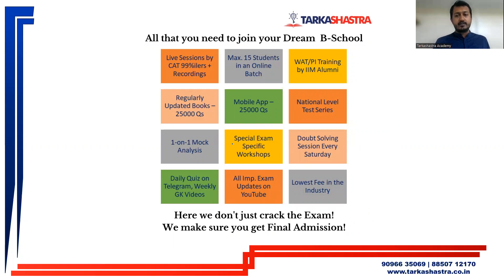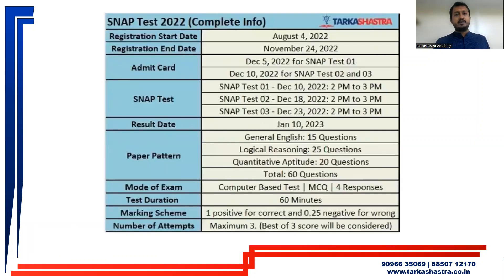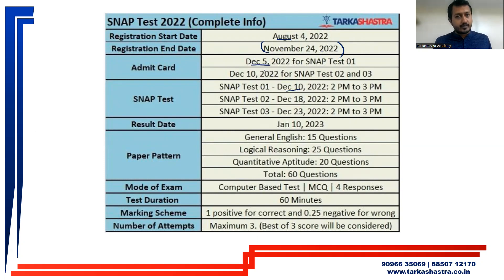If you want to join us for MBA preparation, connect with us at the number provided. For SNAP 2022, registration started on 4th of August and the application ends on 24th of November — less than one week away. SNAP Test 1 will be conducted on 10th of December, with the admit card released on 5th of December. SNAP Test 2 will be conducted on 18th and 23rd of December, with the admit card released on 10th of December.